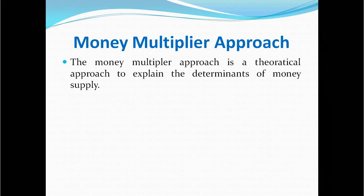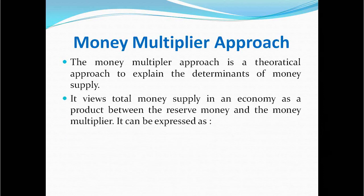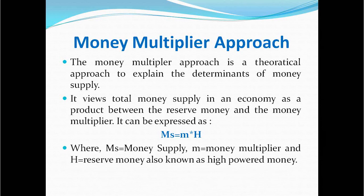The money multiplier approach is a theoretical approach to explain the determinants of money supply. It views total money supply in the economy as a product of the base money and the money multiplier, expressed as: money supply equals multiplier (m) times base money — also known as high-powered money or reserve money (H). Here, MS is money supply, m is the money multiplier, and H is reserve money.